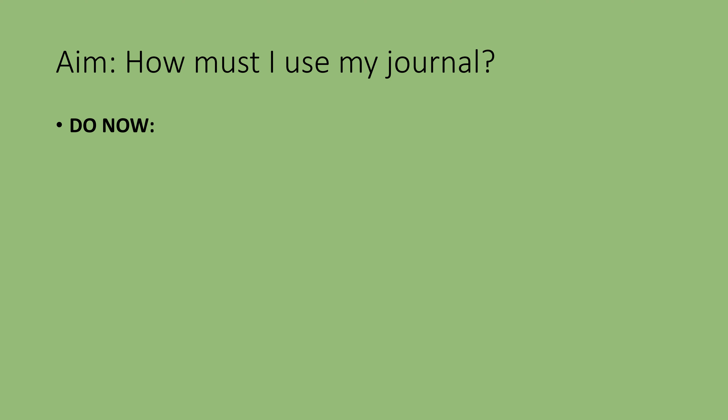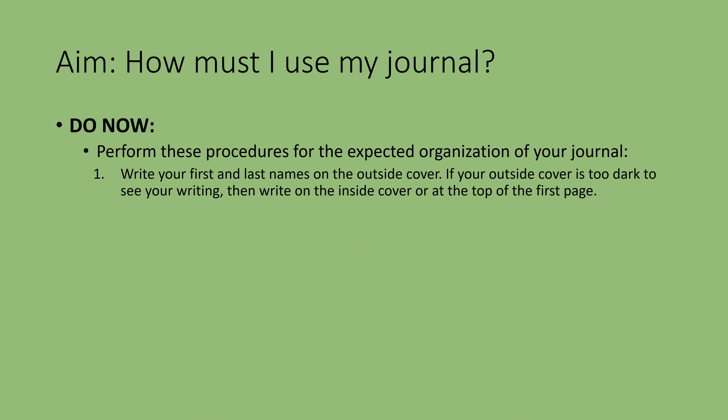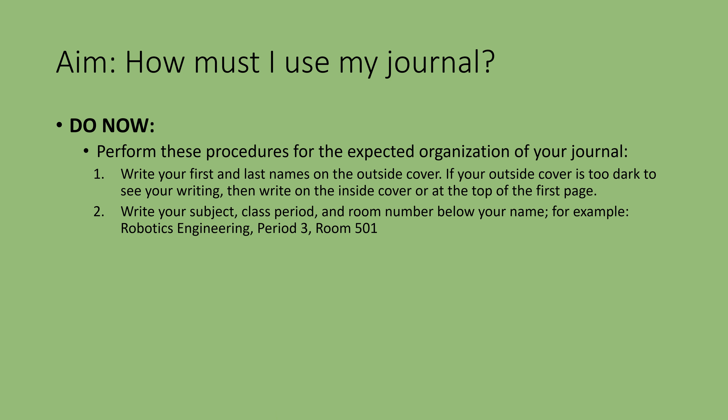Do now: perform these procedures for the expected organization of your journal. One: write your first and last names on the outside cover. If your outside cover is too dark to see your writing, then write on the inside cover or at the top of the first page. Two: write your subject, class period, and room number below your name. For example: Robotics Engineering, period 3, room 501.